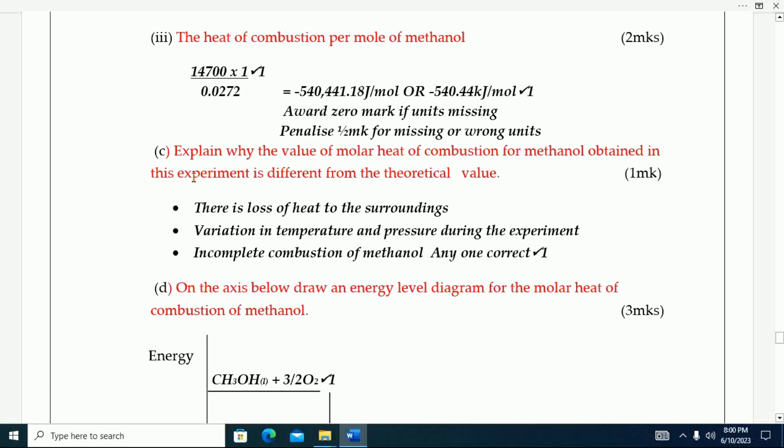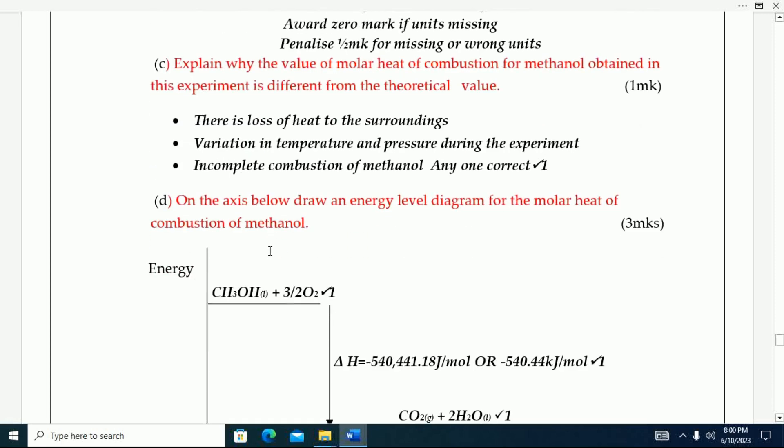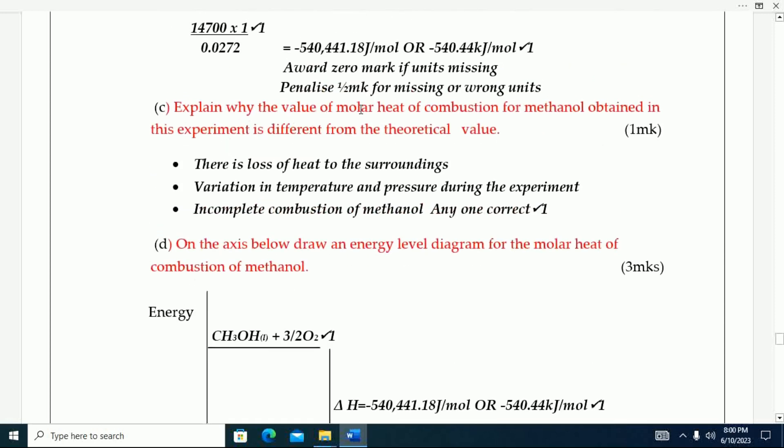Explain why the value of molar heat of combustion for methanol obtained in the experiment is different from the theoretical value. There is loss of heat to the surroundings. Number two, variation in temperature and pressure during the experiment. Incomplete combustion of methanol.